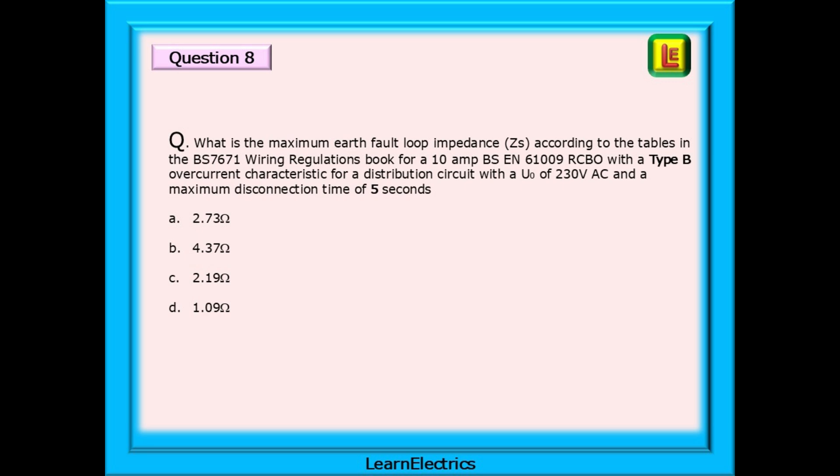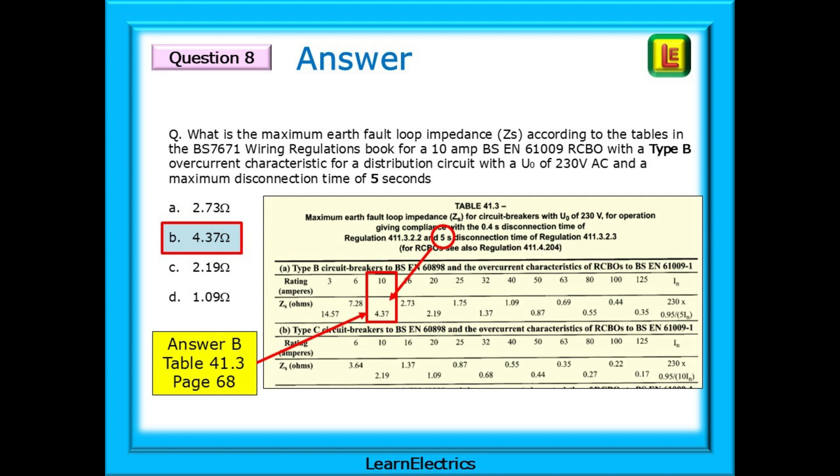On to question 8. What is the maximum earth fault loop impedance ZS according to the tables in the BS 7671 wiring regulations book for a 10 amp BS EN 61009 RCBO with a type B overcurrent characteristic for a distribution circuit with a U0 of 230 volts AC and a maximum disconnection time of 5 seconds.